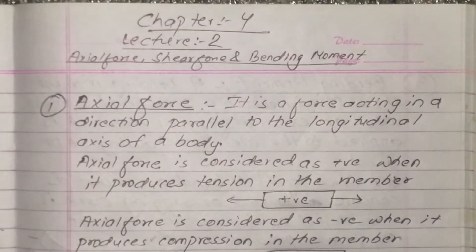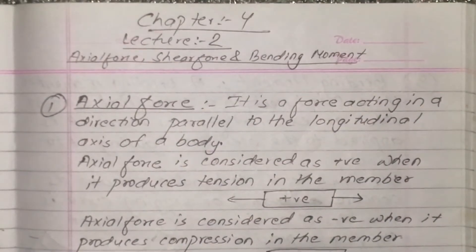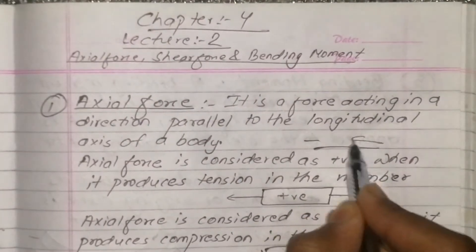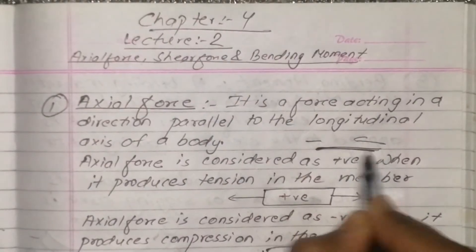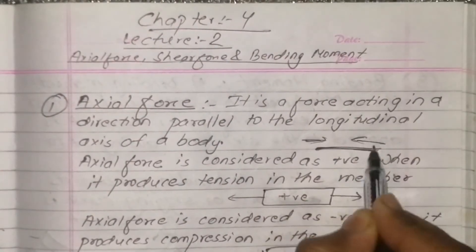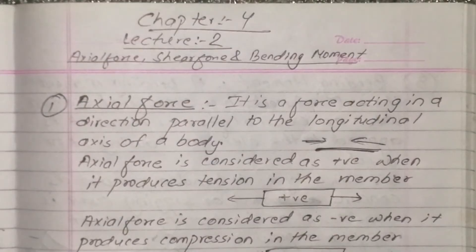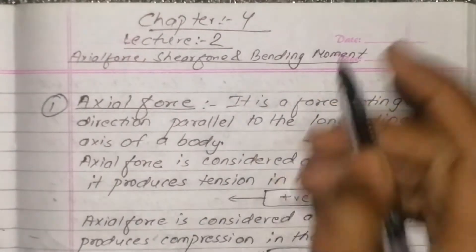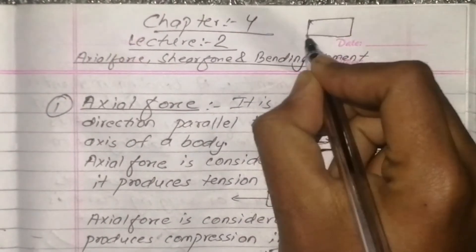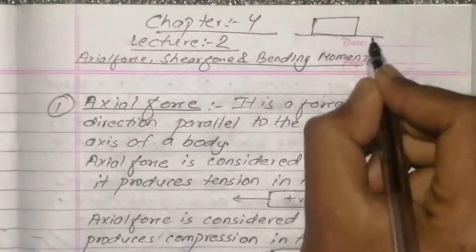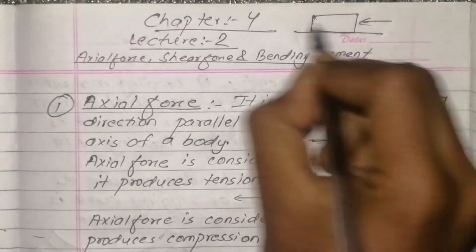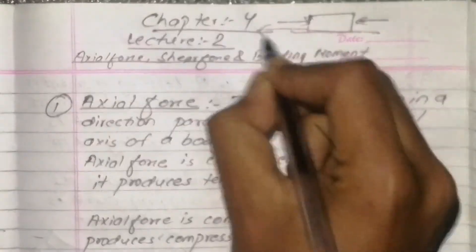We will start with the axial force. Axial force is a force acting in a direction parallel to the longitudinal axis. The longitudinal axis is the axis running along the length of the body. Axial force acts parallel to the longitudinal axis of the body.